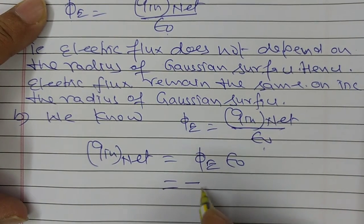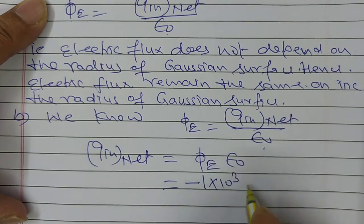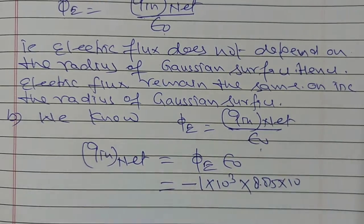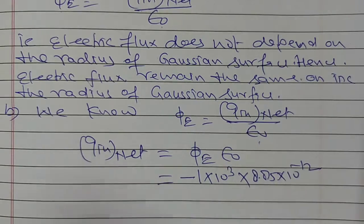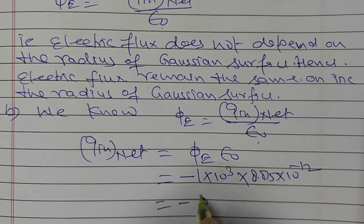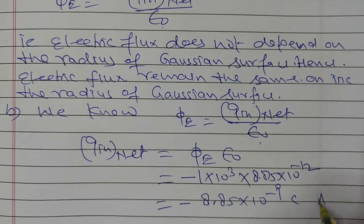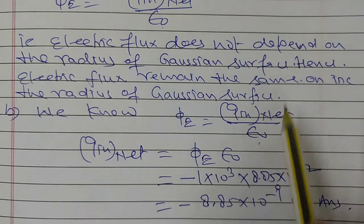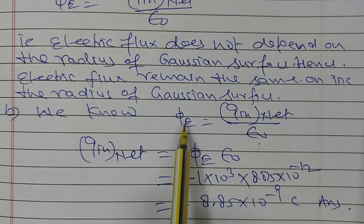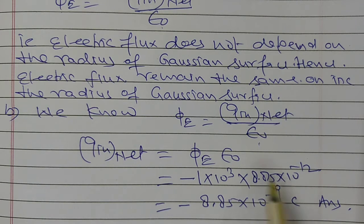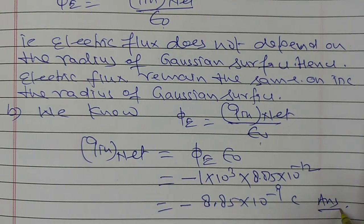On putting in the values: phi is minus 1 into 10 to the power 3, and epsilon naught is 8.85 into 10 to the power minus 12. Therefore, on solving, Q inside net is equal to minus 8.85 into 10 to the power minus 9 coulomb. This is the answer of this problem.